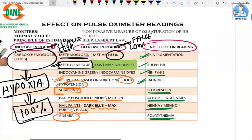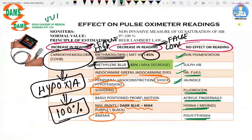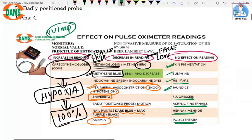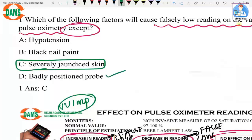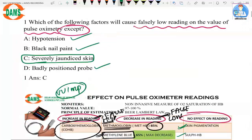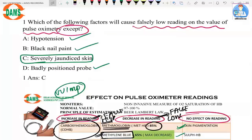This is a very important table — last year questions appeared from this topic in both AIIMS November and PGI November. The correct answer to the question is severely jaundiced skin, because jaundice will not cause a falsely low reading. A badly positioned probe, black nail paint, and hypotension will all decrease readings, but severely jaundiced skin will not affect the pulse oximeter reading.